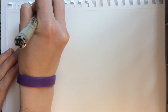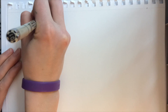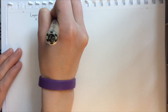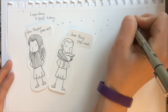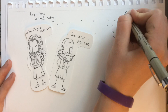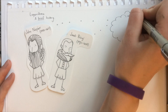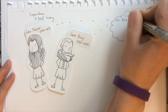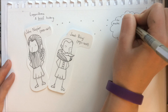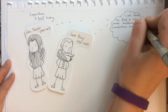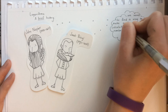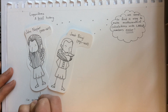What are logarithms and where do they come from? In the mid-1500s, two mathematicians — one by the name of John Napier, the other Jost Bürgi — wanted to find an easier way to do calculations with really large numbers.